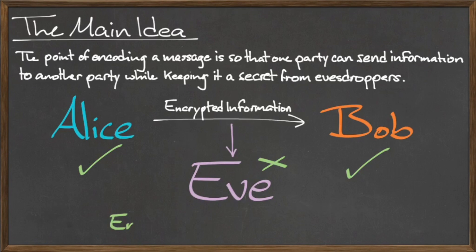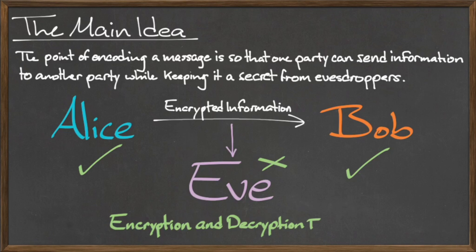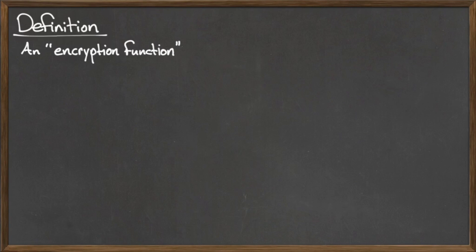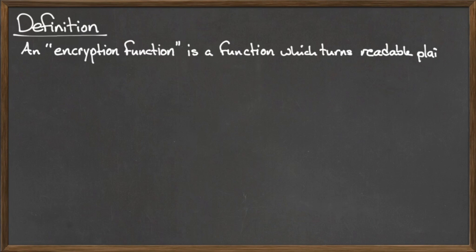In order for Alice to encrypt a message that only Bob can decrypt, they first need to establish a shared key. Before we discuss the key, we first need to define a few important terms.